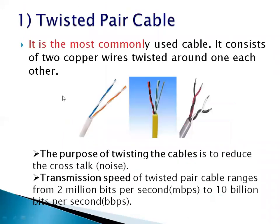Number 1: Twisted pair cable. It is the most commonly used cable. It consists of two copper wires twisted around one another. In this figure, you can see that two wires are twisted around each other. This cable consists of pairs of twisted wires, and the twisting of this cable is to reduce the crosstalk.